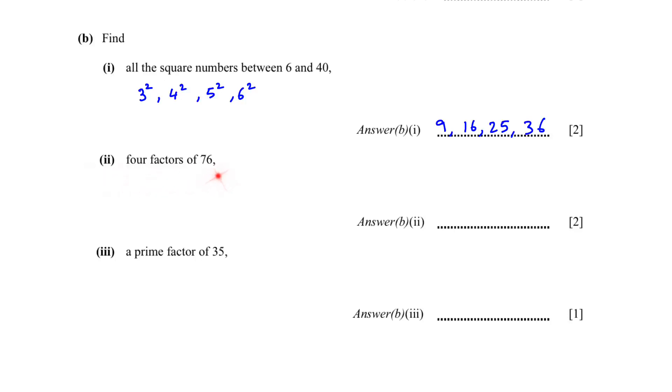B2, 4 factors of 76. The first 2 factors are 1 times 76, and because it is an even number, 2 is also a factor of 76. So 2 times 38. To get that you can divide 76 by 2. So the 4 factors of 76 are 1, 2, 38 and 76. A prime factor of 35: 5 times 7 is 35. Both 5 and 7 are prime numbers. So 5 or 7.